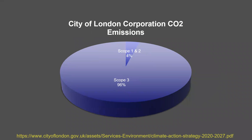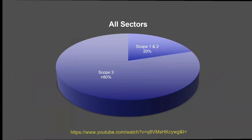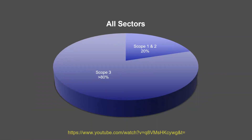The City of London Corporation generated their climate action strategy this month — you can go and download it from the link at the bottom. And when you have a look in there, you'll find that their scope three is 96%. When you look at the greenhouse gas protocol, the studies they've done on business sectors around the world, they've found that scope three accounts for more than 80% in each business sector.